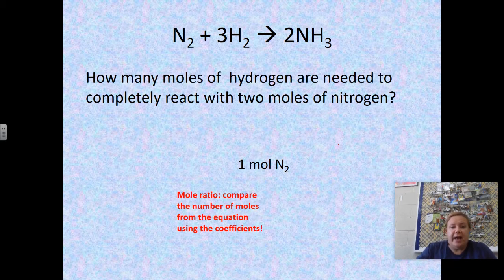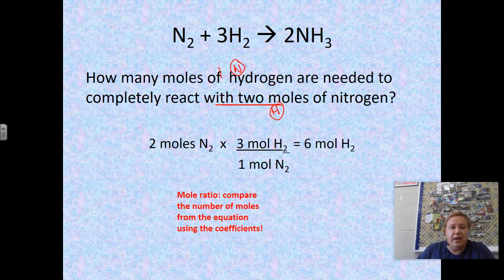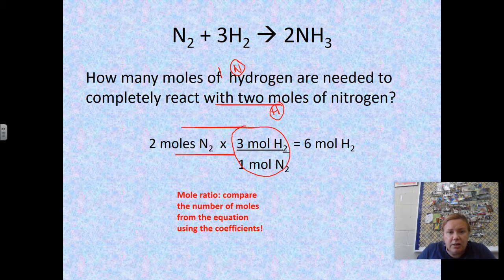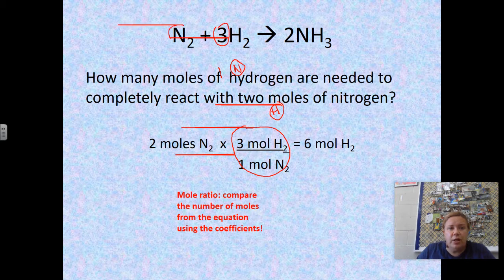So our have is two moles of nitrogen, and our need is moles of hydrogen. We start with two moles of nitrogen, times three moles of hydrogen to one mole of nitrogen. That circled mole ratio came directly from the chemical equation — three moles of hydrogen for every one mole of nitrogen, based on the coefficients.